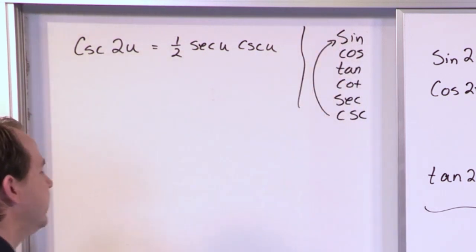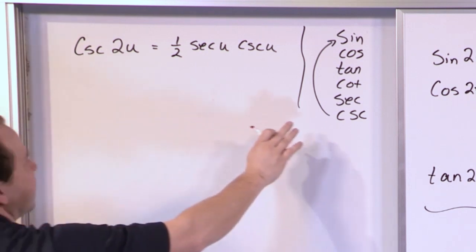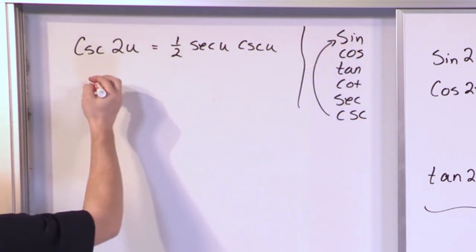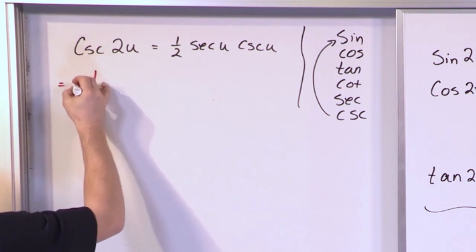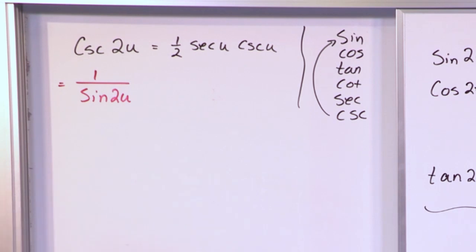Cosecant goes with sine. So I can rewrite this whole thing. Since they go with each other like that, the cosecant is 1 over the sine function. So this basically reduces to 1 over sine of 2u because the argument carries down with it.